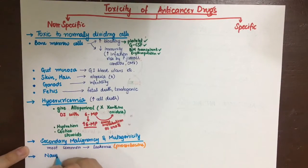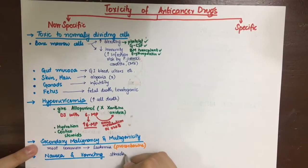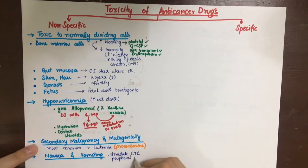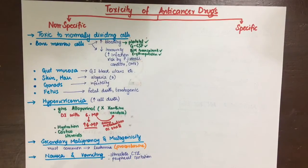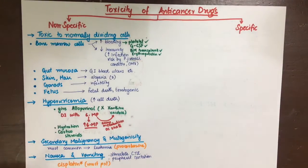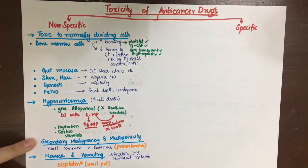Another general side effect is nausea and vomiting by directly stimulating the chemoreceptor trigger zone. Cisplatin is the most important cause of nausea and vomiting, and it can be managed by antiemetics such as ondansetron, a 5-HT3 antagonist that acts on the chemoreceptor trigger zone 5-HT3 receptor to inhibit vomiting.